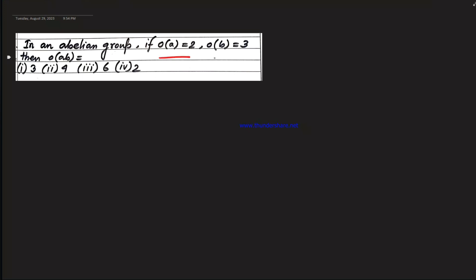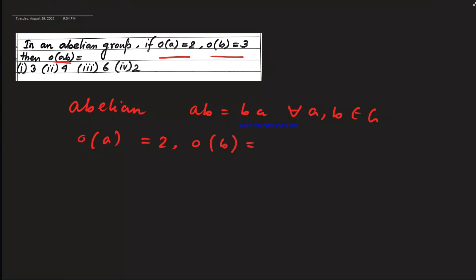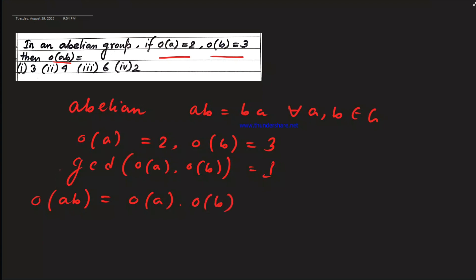If order(a) = 2 and order(b) = 3, then find order(ab). Since gcd(order(a), order(b)) = gcd(2, 3) = 1, they are coprime. By the property of abelian groups, order(ab) = order(a) × order(b) = 2 × 3 = 6. Option 3 is the right option.